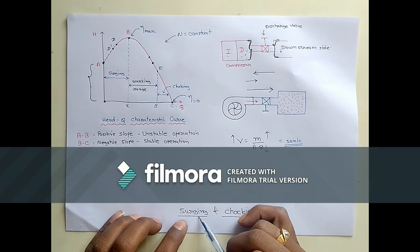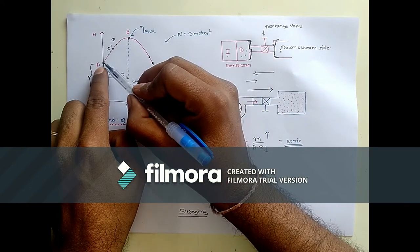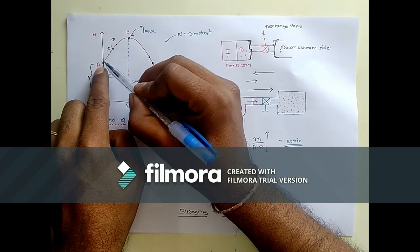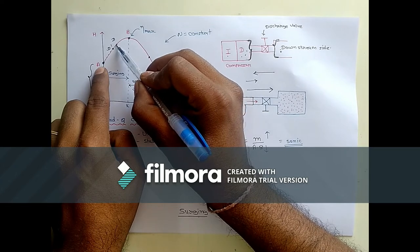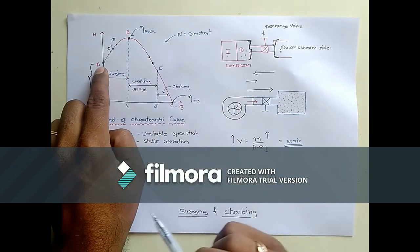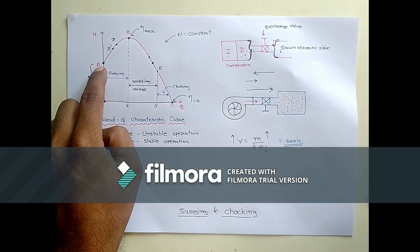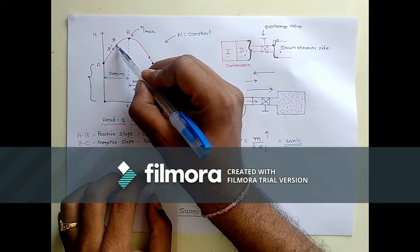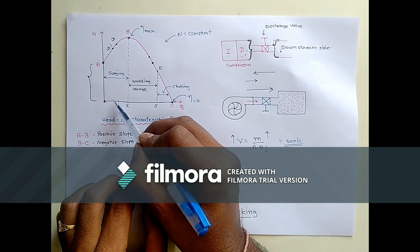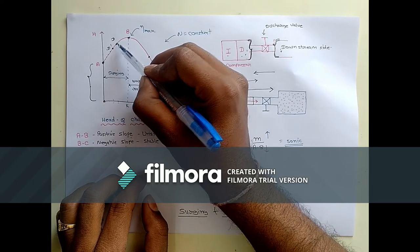Now we will talk about the surging process. What actually happens in the surging process — we look at the region from A to B, which is the positive slope region. At a particular point D in that region, due to increase in friction or increase in load, suppose the discharge gradually decreases from D to D dash. So discharge decreases, and since this point is on the positive slope side, its head also decreases.